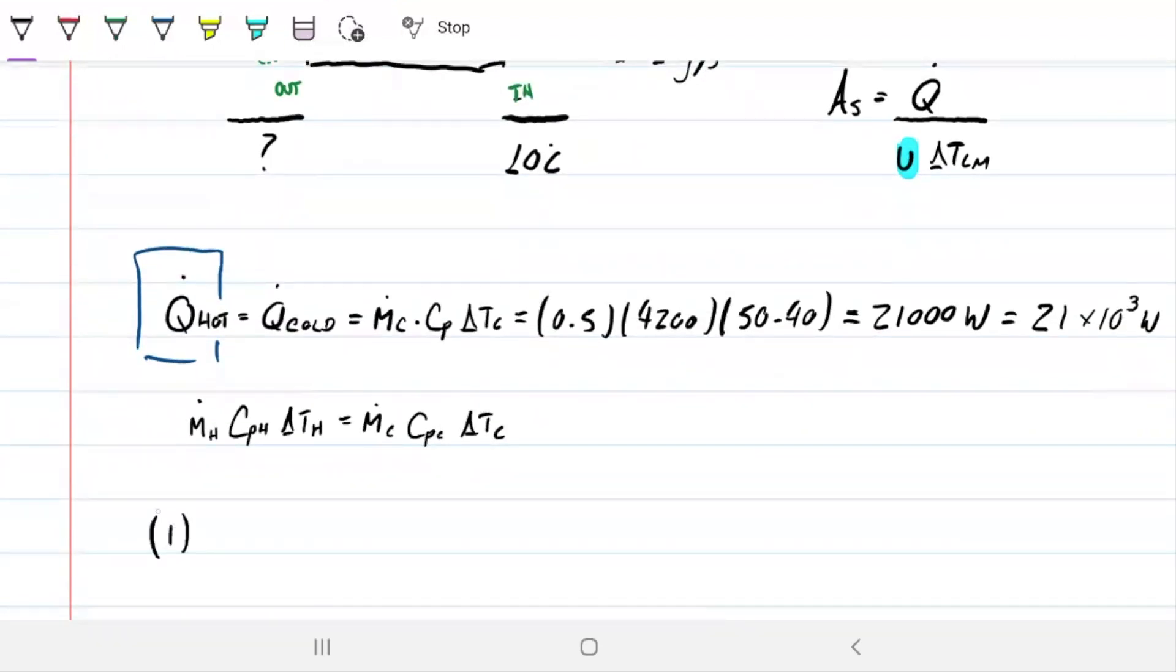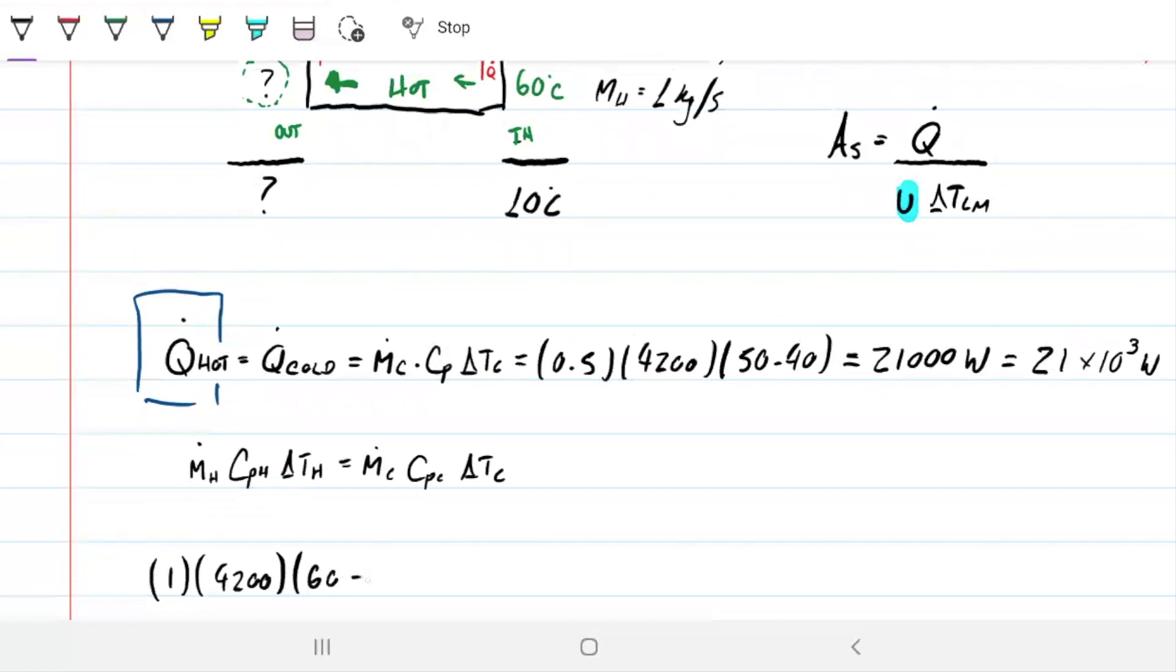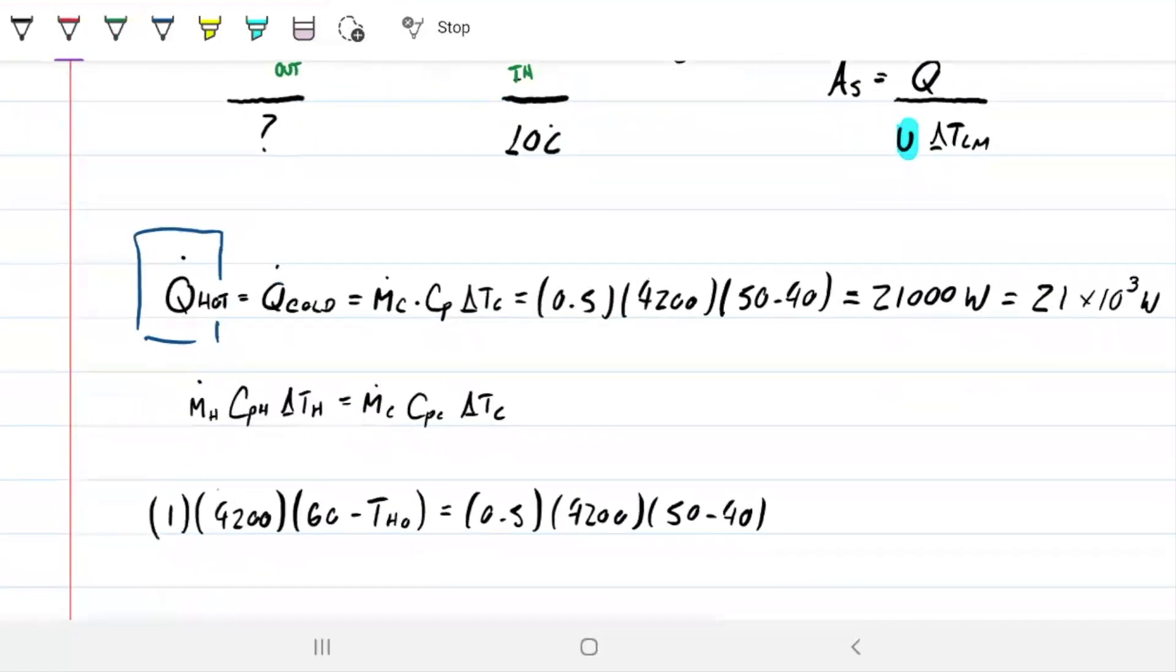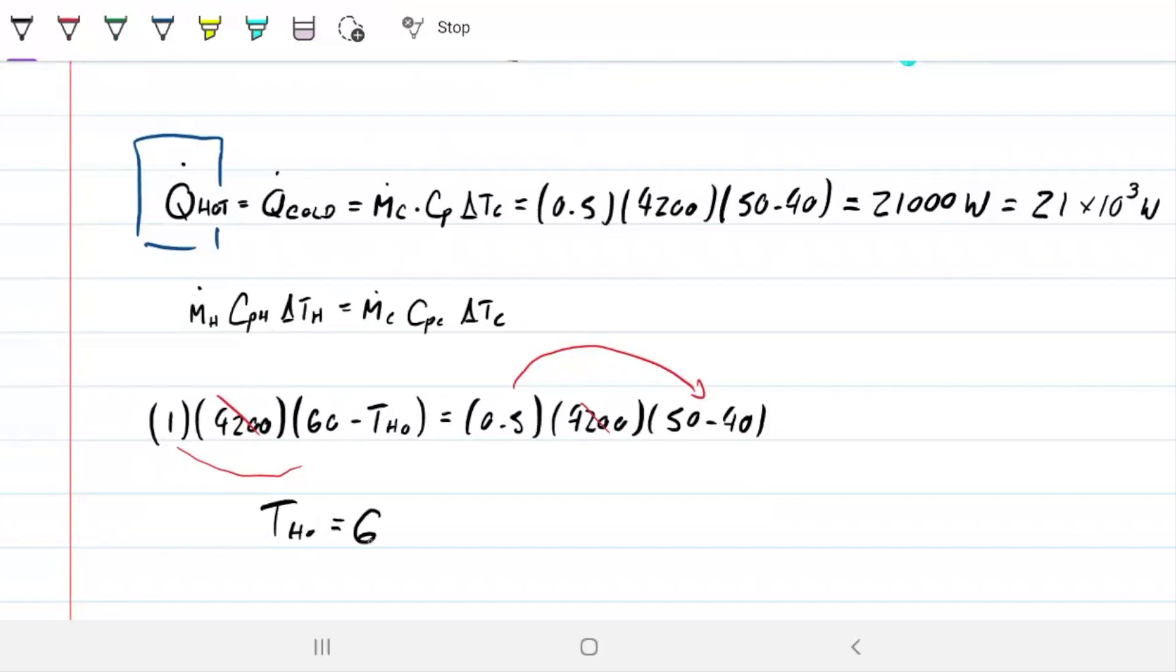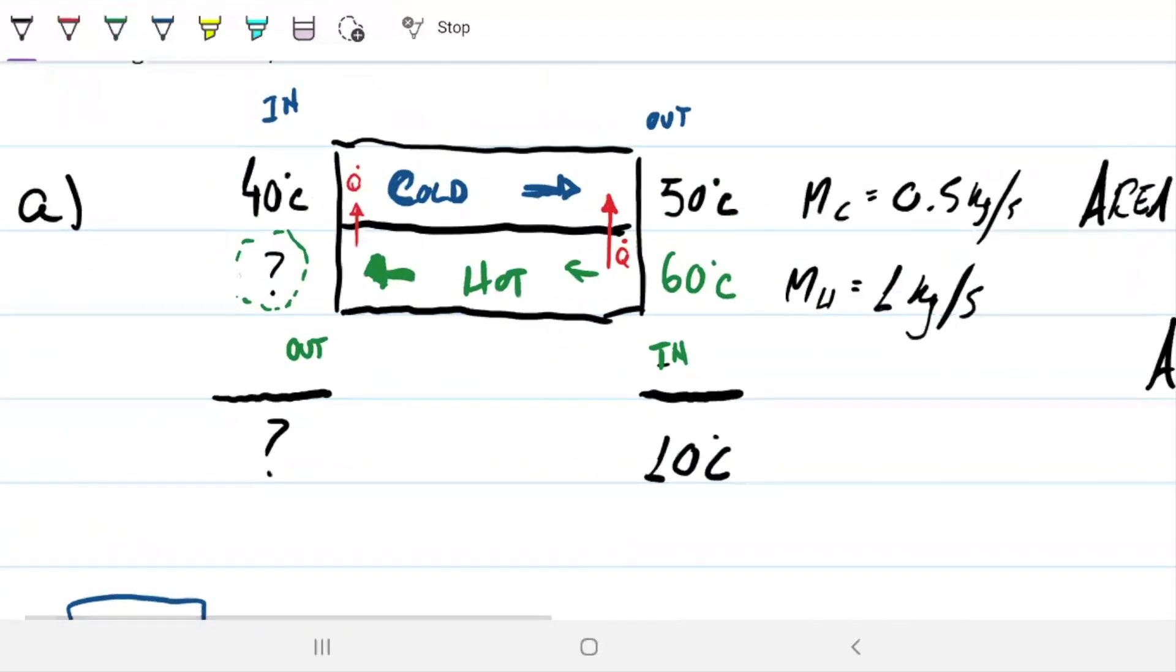That means the mass flow rate of the hot times CP of the hot times delta T of the hot equals the mass flow rate of the cold, CP of the cold, and delta T of the cold. This is going to be 1 kg/s times 4200, entering at 60 and leaving at a temperature I don't know. So T_hot_out equals 0.5 times 4200 times (50 minus 40). These are the same so they cancel. We're left with half of 10, that's 5. So T_hot_out equals 60 minus 5 equals 55°C.